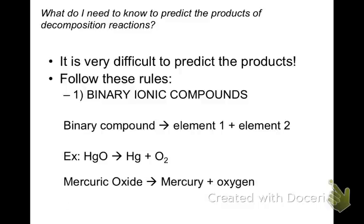In words we would say mercuric oxide or mercury two oxide makes mercury plus oxygen. Notice that the 'ide' ending is dropped because it is now an element not an ion in a compound.